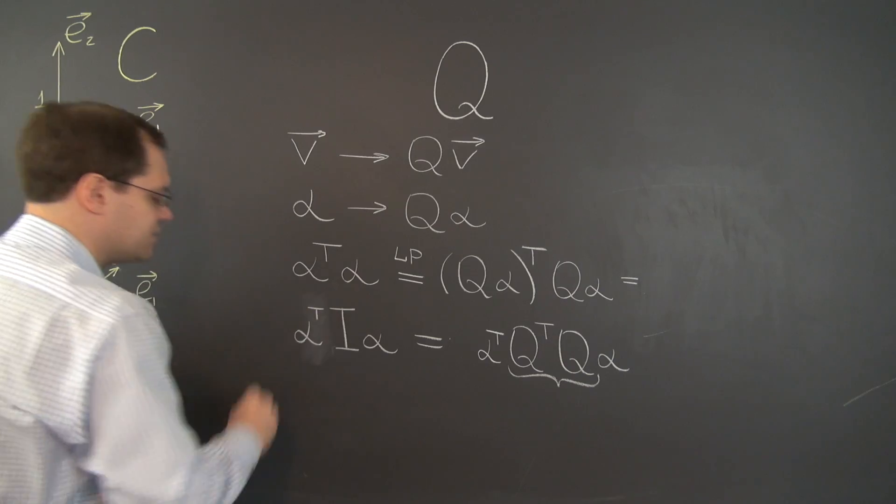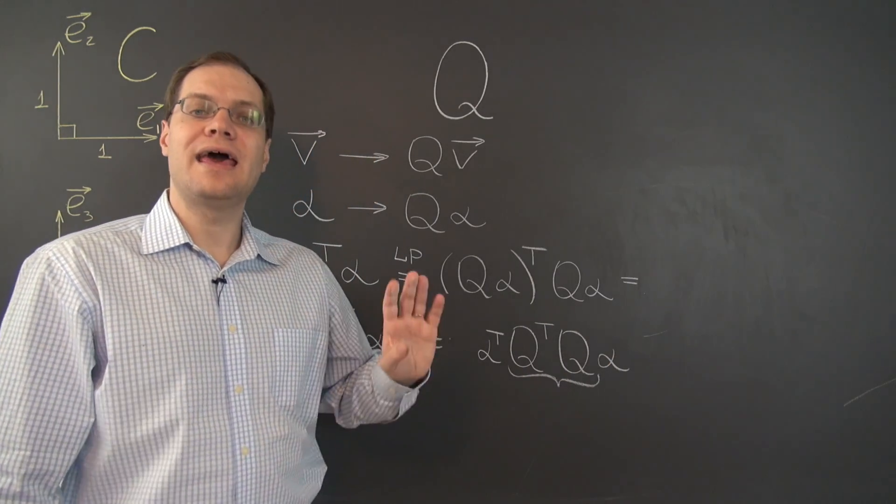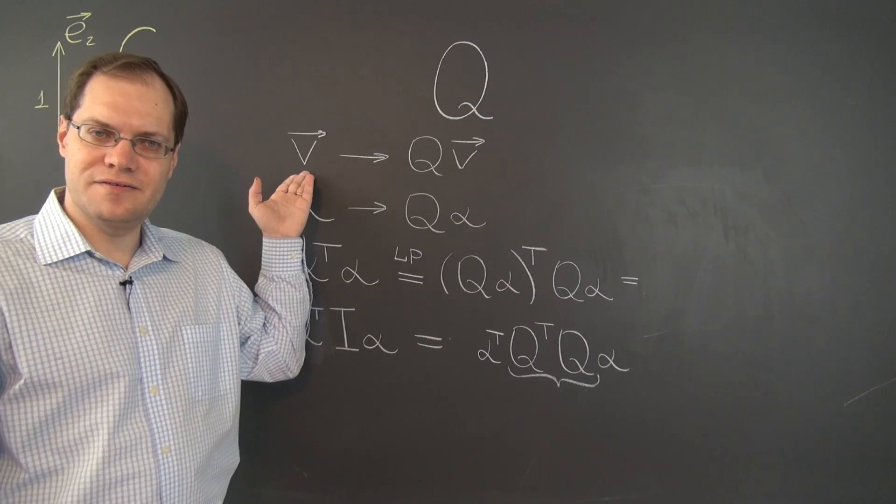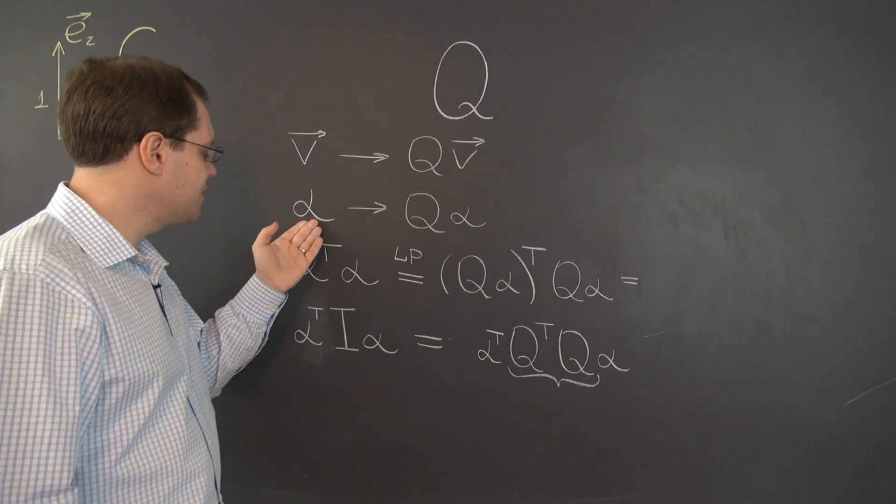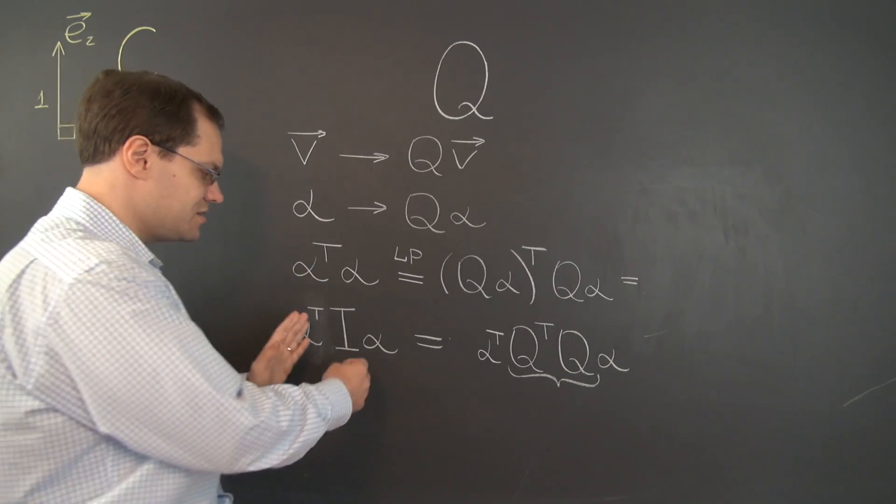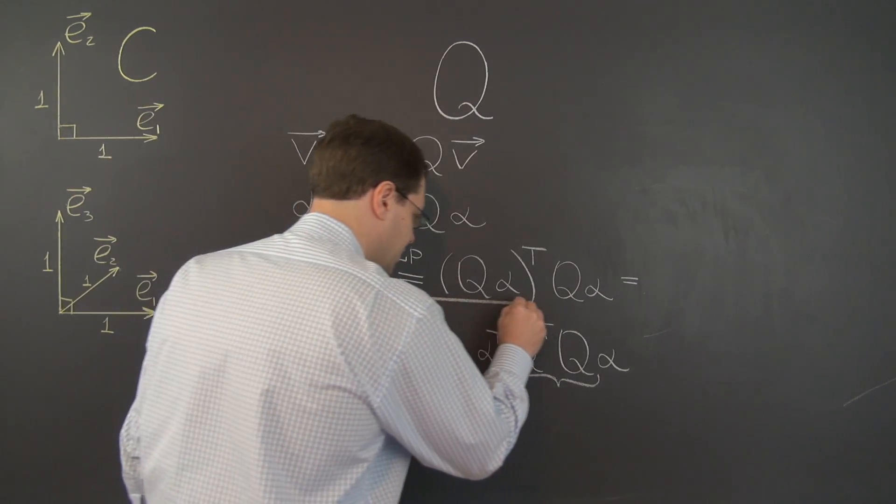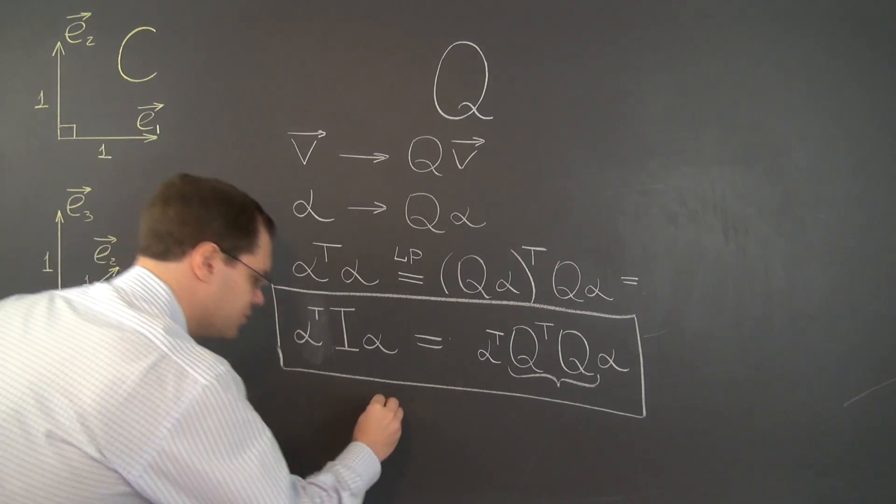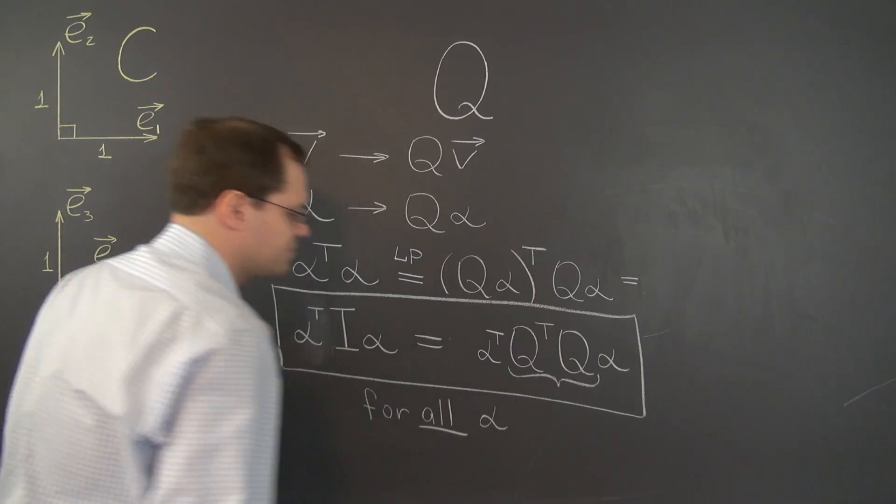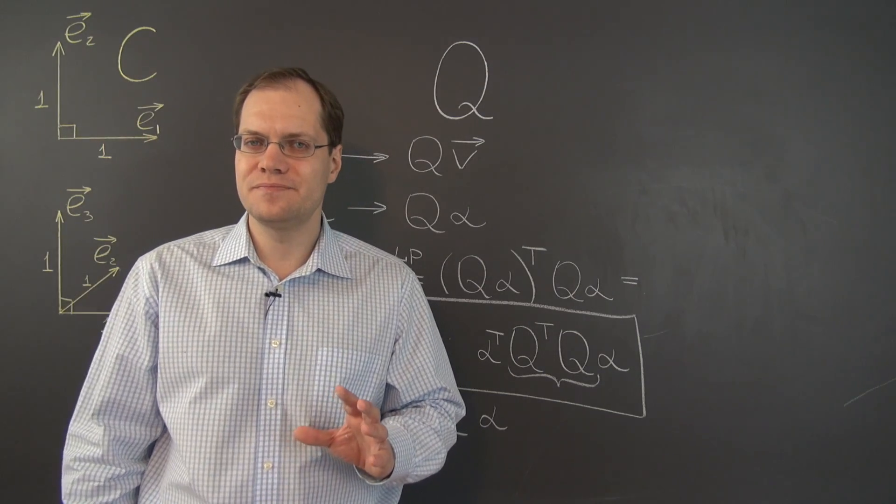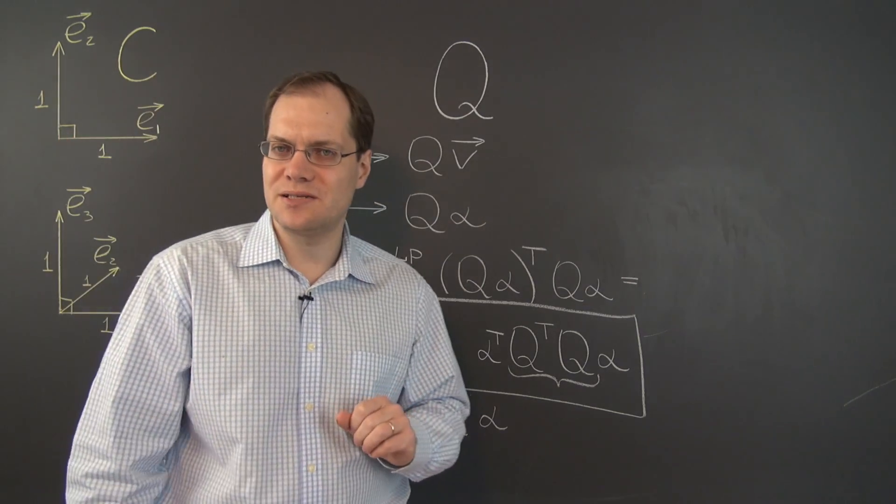Let me rewrite this a little bit more elegantly. We have alpha transpose I alpha equals alpha transpose this matrix alpha. And this holds not just for this vector V and its component representation alpha, but for all possible vectors V and therefore all possible vectors alpha from R2. So this isn't just an equality, a one-off equality, this is really an identity that works for all alpha.